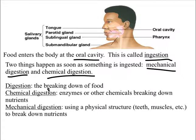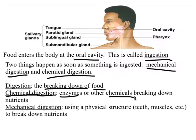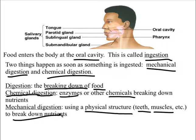Digestion means breaking down food or nutrients. There are two types. Chemical digestion is where enzymes or other chemicals do the breaking down. Mechanical digestion is where a physical structure — like your teeth or muscles — is what breaks down the nutrients. So if a chemical does the digestion, it's chemical digestion.